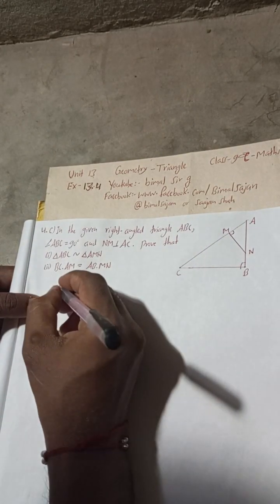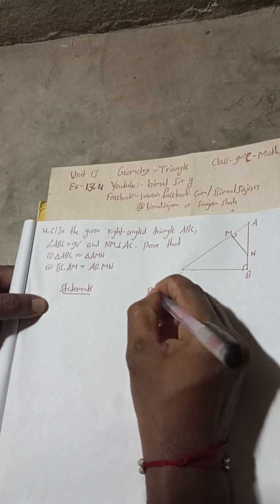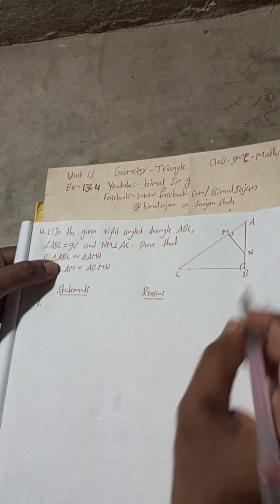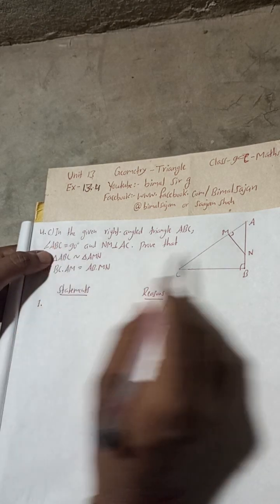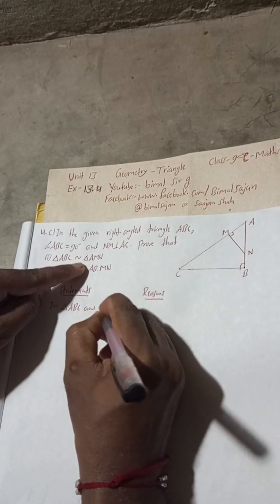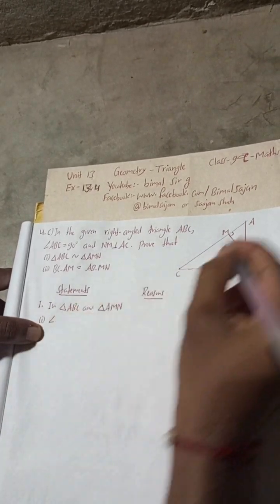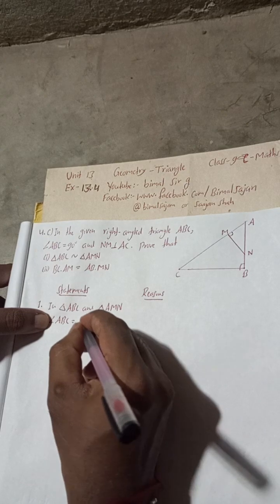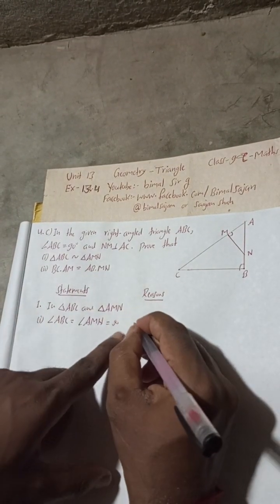Now, in triangle ABC and triangle AMN: angle ABC equals angle AMN, and both are 90 degrees. The reason is: given. Angle ABC is equal to 90 degrees as given, and angle AMN is equal to 90 degrees because NM is perpendicular to AC — so that is also given.